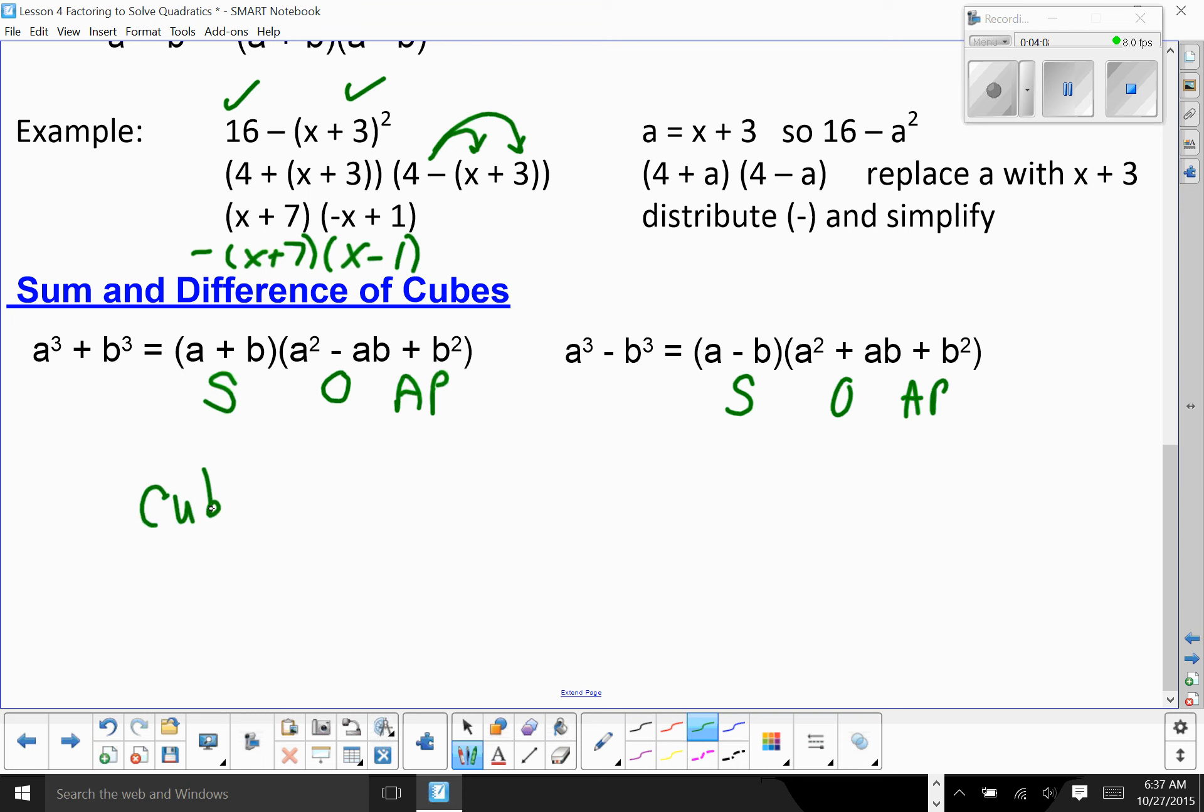You have the cube root. You've got the cube roots. That's what goes first. Then you square, multiply, and square. When I say that, you square the first cube root, you multiply the cube roots, you square the second cube root. And that's it. Again, it's a pattern.